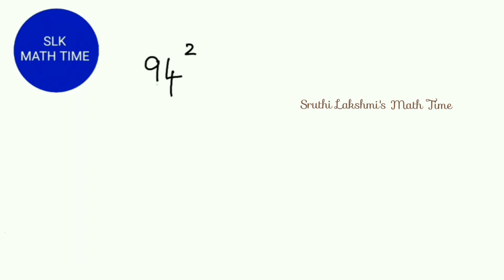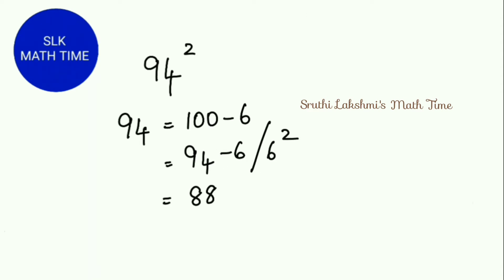Let's see another example. 94 square. 94 is close to the base 100. 94 is 100 minus 6. We subtract this 6 from 94. Then we put a slash. Then we square this 6. So 94 minus 6 is 88. And 6 square is 36.